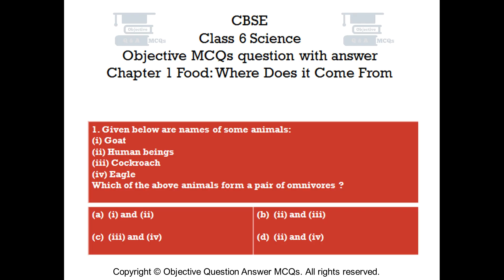Question number 1. Given below are names of some animals: Goat, Human beings, Cockroach, Eagle. Which of the above animals form a pair of omnivores?